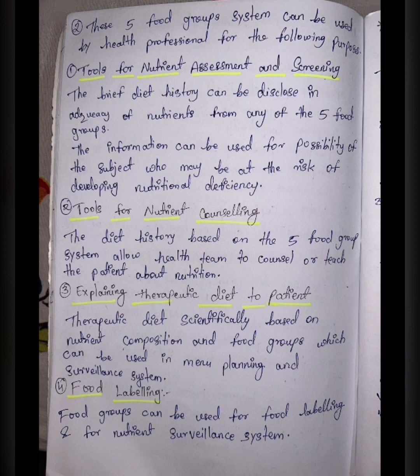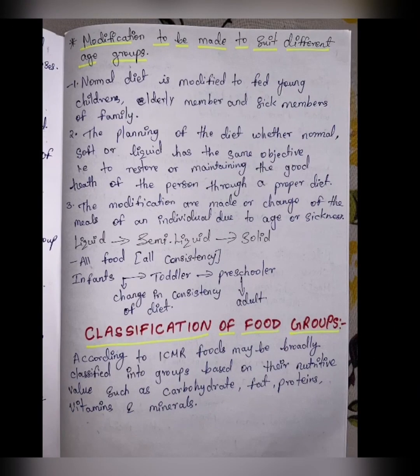Fourth, food labeling — food groups can be used for food labeling and nutrient surveillance systems. Modifications are made to suit different age groups, such as changing food from hard to soft, or from solid to liquid, so that every age group can consume it — for example, small toddlers cannot eat solid food, so it must be softened or made liquid for them as well as for elderly and sick people.